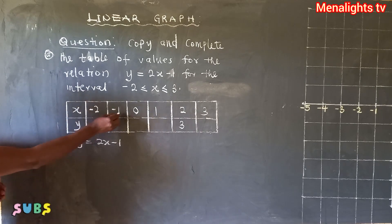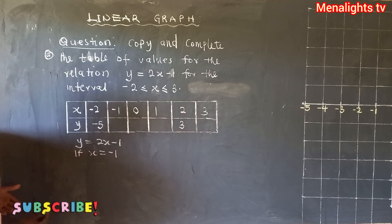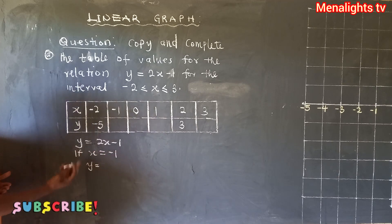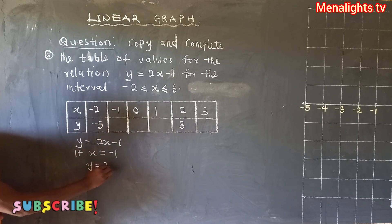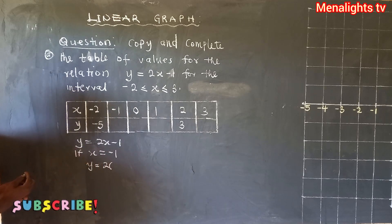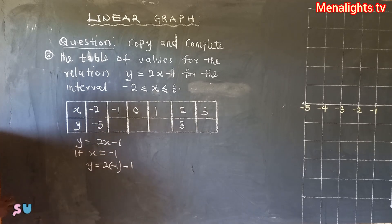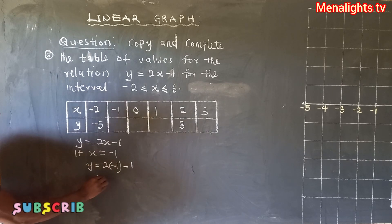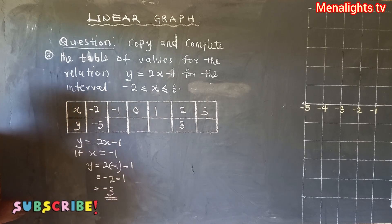The first one: if x = -1, then y = 2x - 1. In place of x we put -1, so we have 2 × (-1) = -2, then -2 - 1 = -3. So under x = -1, the value of y is -3.